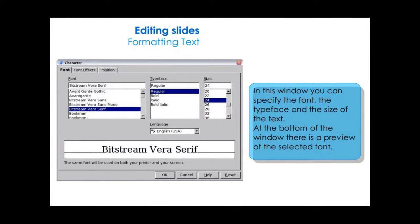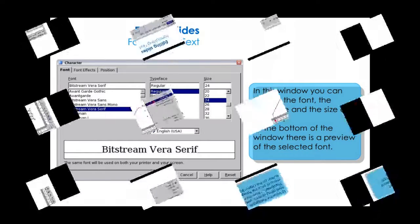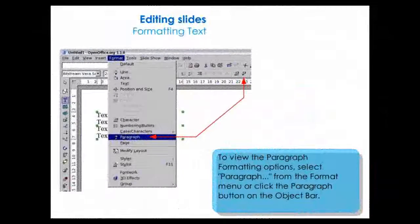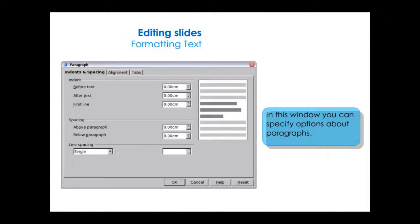In the character window, you can specify the font, the typeface, and the size of the text. At the bottom of the window, there is a preview of the selected font. To view the paragraph formatting options, select Paragraph from the Format menu or click the paragraph button on the object bar. In this window, you can specify options about paragraphs.